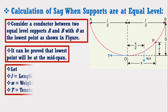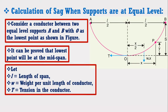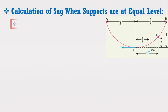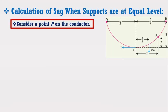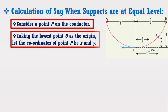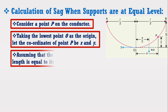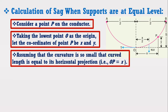Let L be the length of the span, W be the weight per unit length of the conductor, and T be the tension in the conductor. Consider a point P on the conductor, taking the lowest point O as the origin. Let the coordinates of point P be X and Y. Assuming that the curvature is so small that the curved length equals its horizontal projection, OP is equal to X.